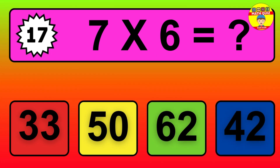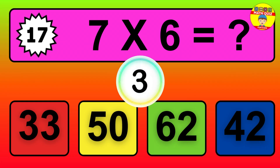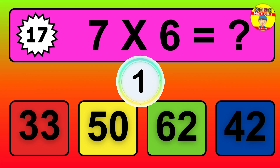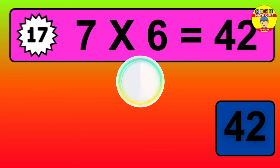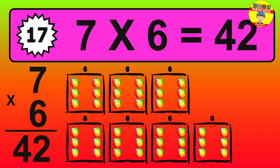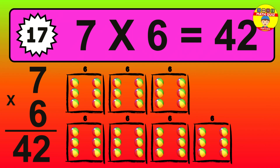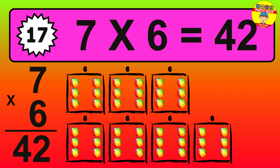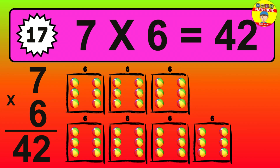Question 17. 7 times 6 equals what? The answer is 7 times 6 is 42. To calculate, we have 7 groups with 6 balls each one. So, how many balls do we have? 42 balls.